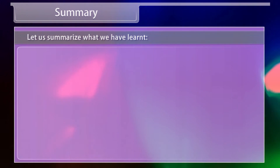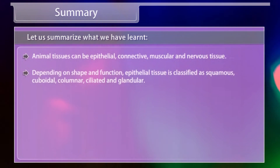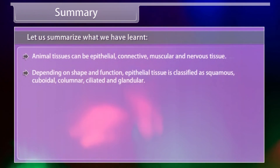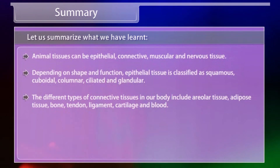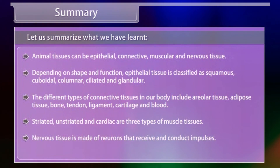Let us summarize what we have learned. Animal tissues can be epithelial, connective, muscular and nervous. Depending on shape and function, epithelial tissue is classified as squamous, cuboidal, columnar, ciliated and glandular. The different types of connective tissues include areolar tissue, adipose tissue, bone, tendon, ligament, cartilage and blood. Striated, unstriated and cardiac are the three types of muscle tissues. Nervous tissue is made of neurons that receive and conduct impulses.